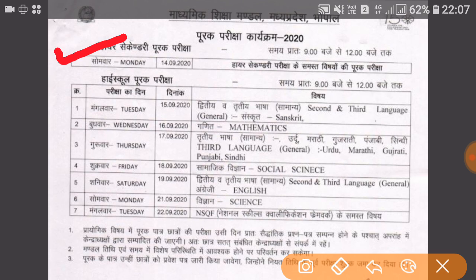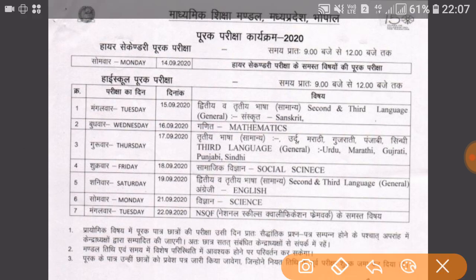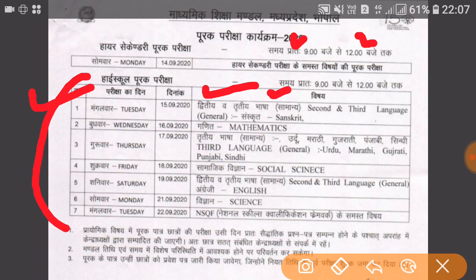Now we are talking about high school. First, you will have an exam on 15th September, then on 30th, then an exam on 16th, then on 17th — which is your third language, like Urdu, Marathi, Gujarati, Punjabi, Sindhi, whatever language you have.